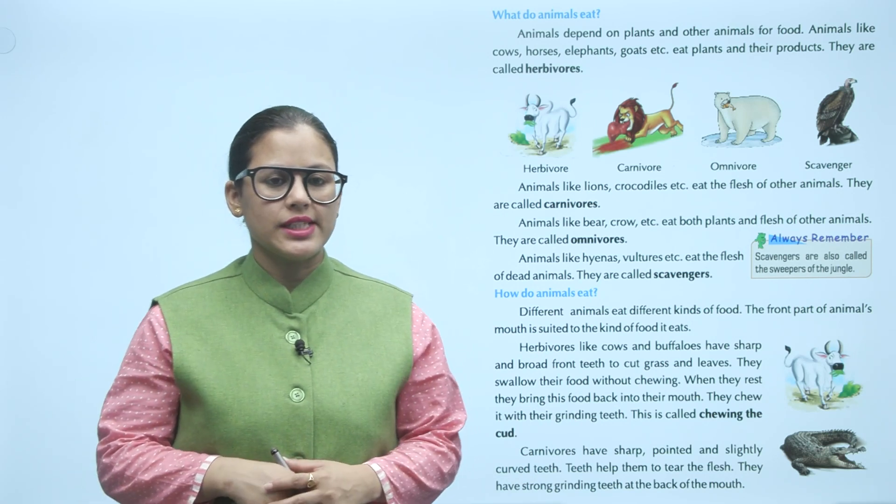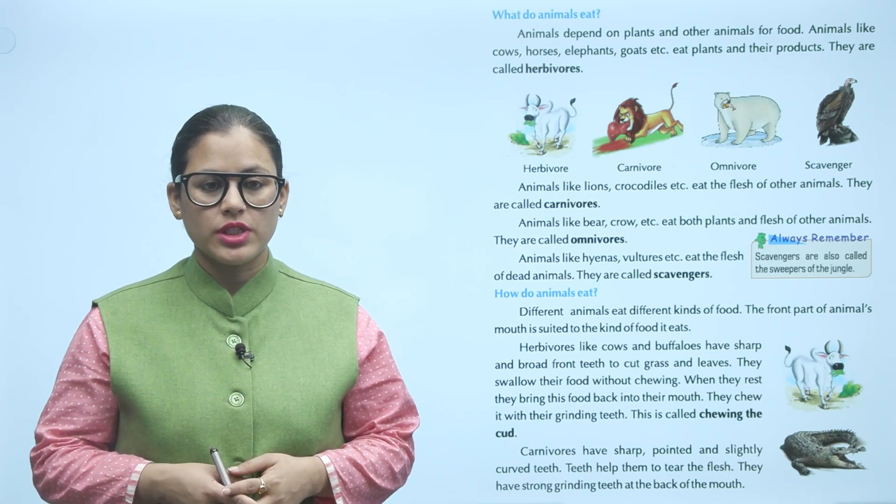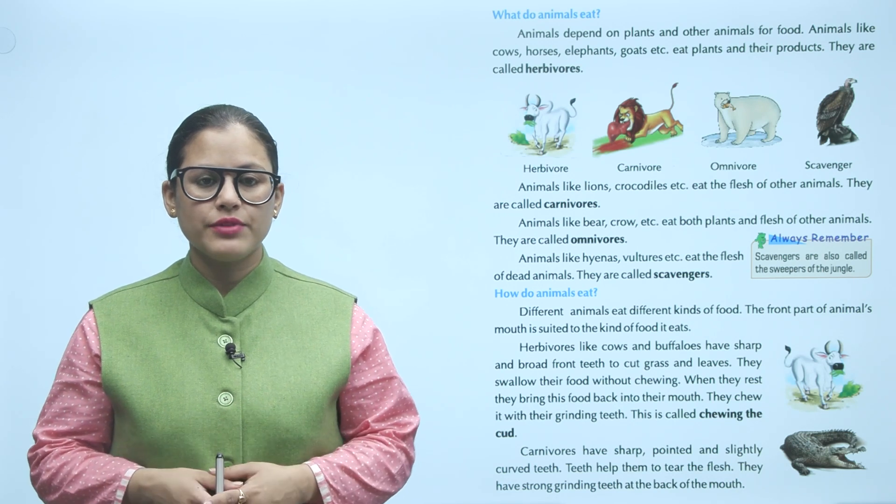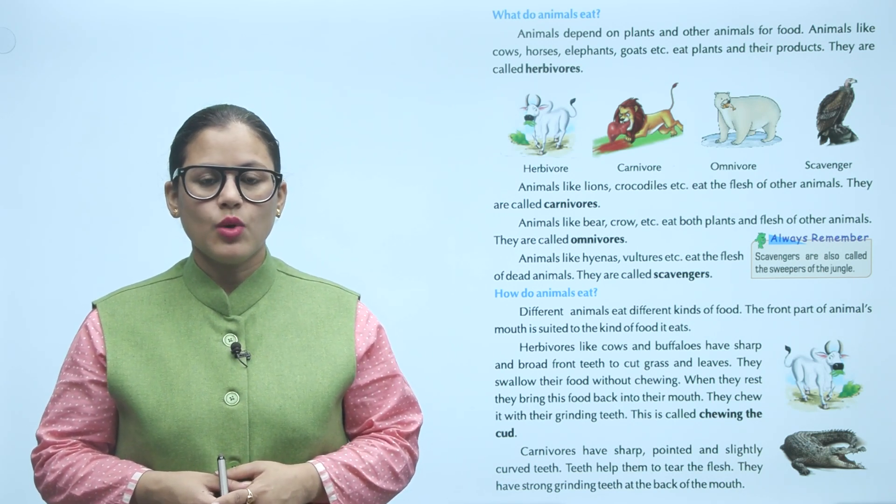What do animals eat? Animals depend on plants and other animals for food. Animals like cows, horses, elephants, goats etc eat plants and their products. They are called herbivores.